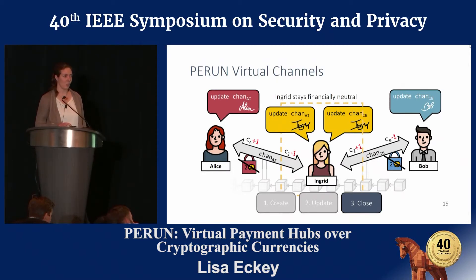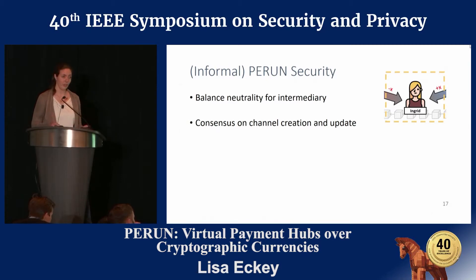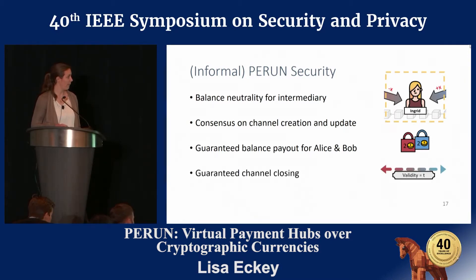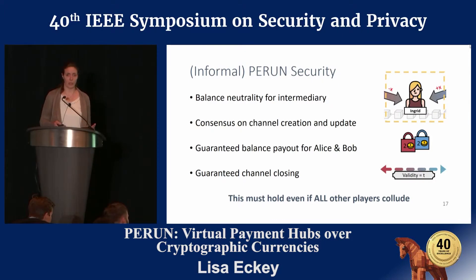This financial neutrality is one of the important security properties we prove in our work. Another property is that all parties involved in a channel must always have consensus on whether a channel has been opened, updated, or closed. A third property is that whenever someone promises a payment by signing a new state, the other person has a guarantee of payout — they can enforce this payment. For Ingrid, it's important to know that the coins she locked for Alice and Bob can eventually be unlocked, so the virtual channel has a validity — a fixed lifetime — after which Ingrid can request to close the channel. This must hold even if all other players collude. The paper provides a thorough formal modeling and security proofs of these protocols in the UC model.